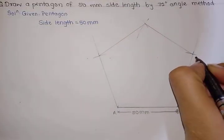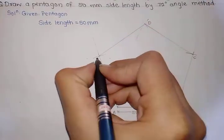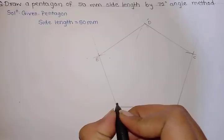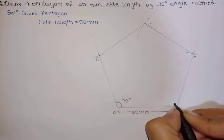Right, we will name the points like this, and the angle of 72 degrees.